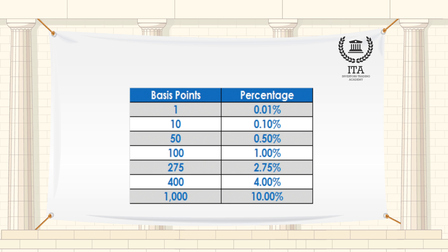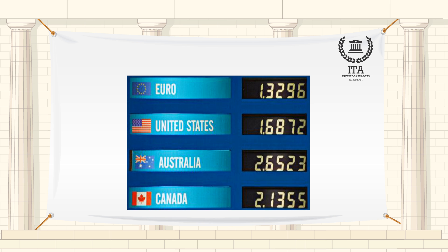The relationship between percentage changes and basis points can be summarized as follows: a 1% change equals one hundred basis points, and 0.01% equals one basis point. Basis points are used as a convenient unit of measurement in contexts where percentage differences of less than 1% are discussed.